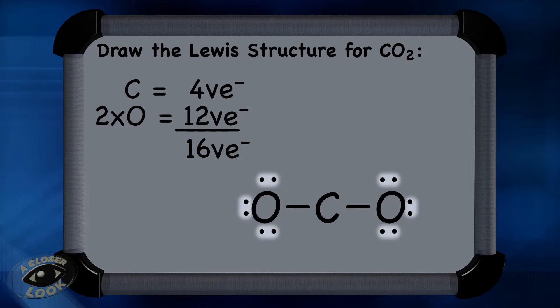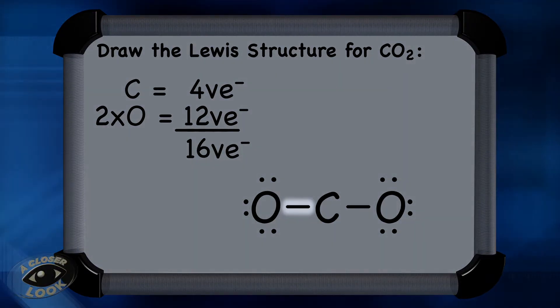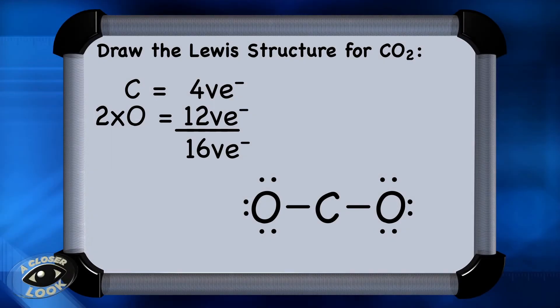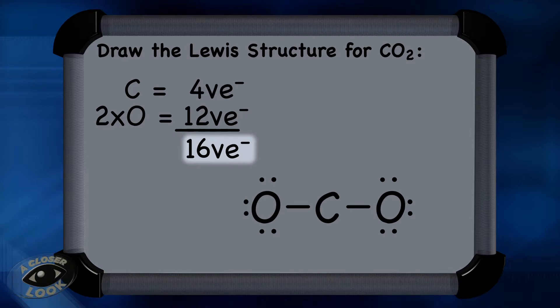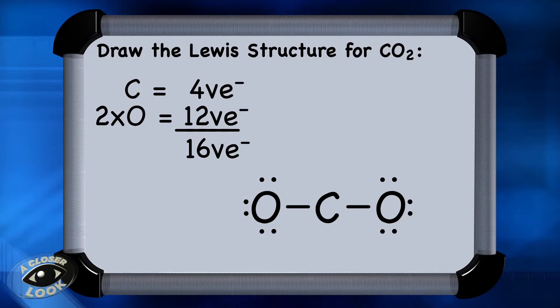This is not a finished Lewis structure, because carbon is not stable — it only has 2, 4 electrons around it. So this is the first time double or triple bonds are needed to satisfy the octet rule. In this structure for CO2 there are no more electrons and carbon isn't stable, so you have to start over. Remember, there are 16 electrons to place. Try using multiple bonds — sometimes Lewis structures require trial and error, and this is where double and triple bonds come into play.